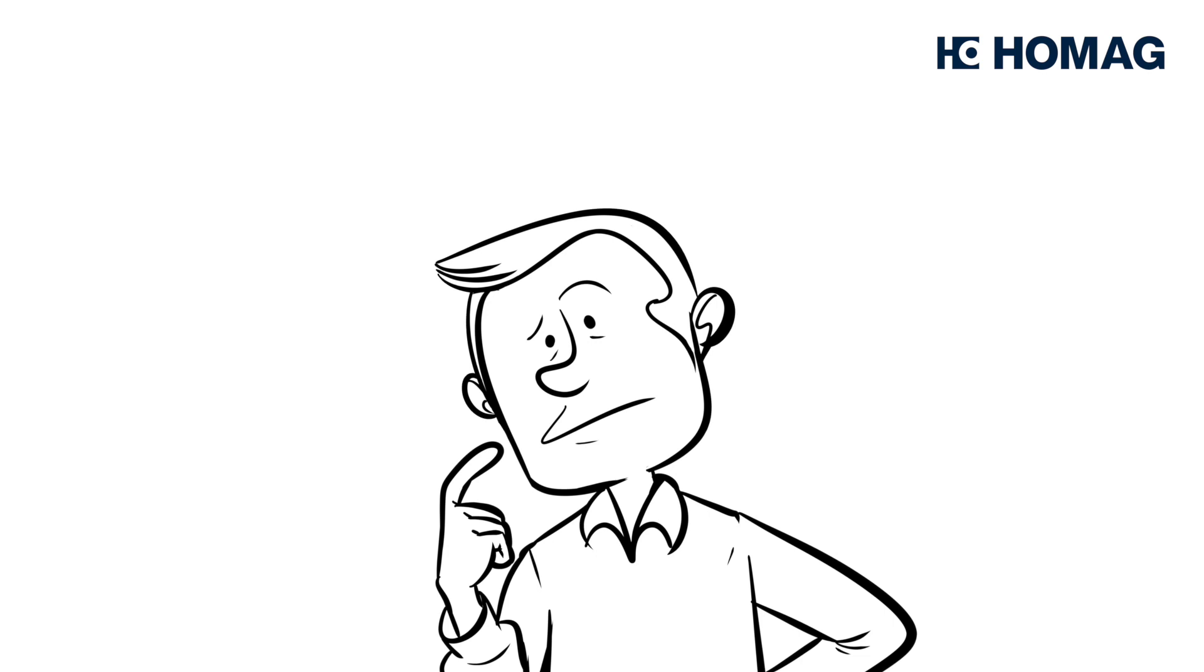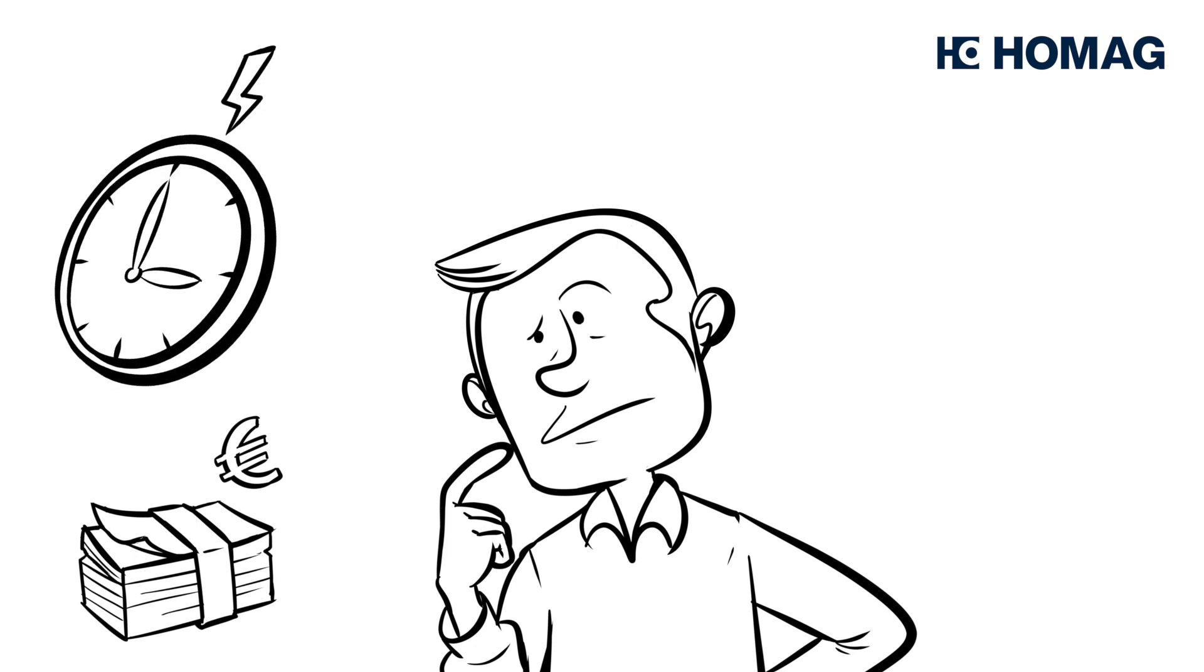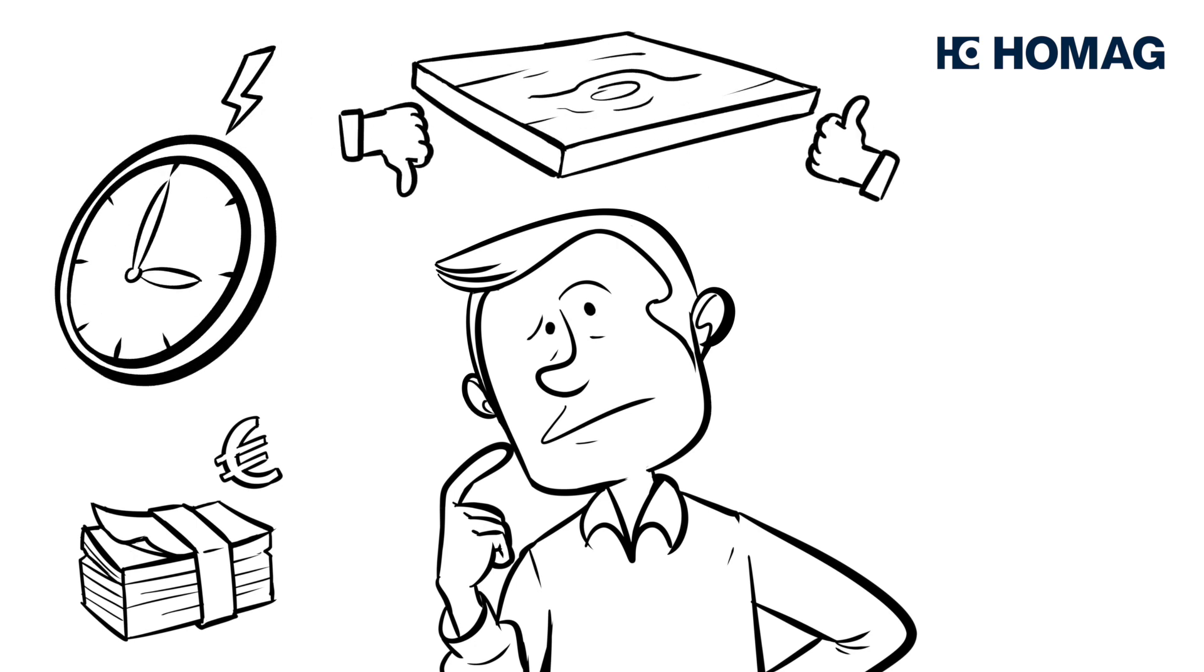Even with frequent saw blade changes and a high joint measurement during edge processing, cases of poor edge quality occur again and again. Possible consequences? Expensive reworking, additional time and fluctuating process reliability. This gives Henry a headache.